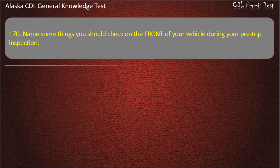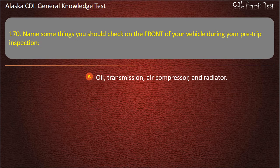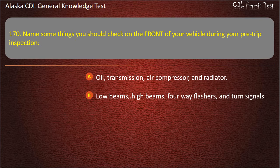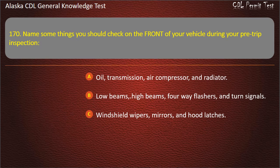Question 170. Name some things you should check on the front of your vehicle during your pre-trip inspection: oil, transmission, air compressor, and radiator; low beams, high beams, four-way flashers, and turn signals; or windshield wipers, mirrors, and hood latches. Answer: Low beams, high beams, four-way flashers, and turn signals.